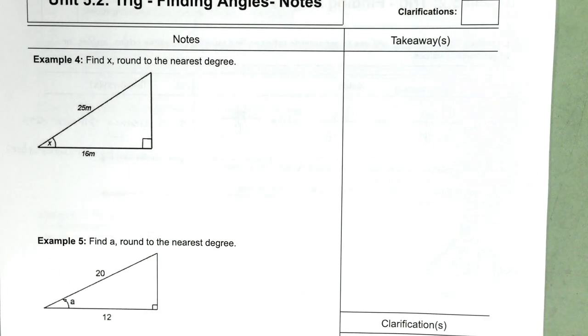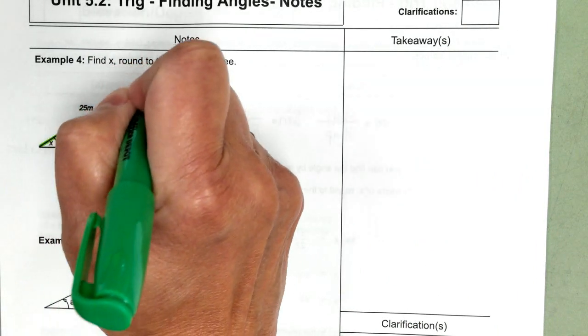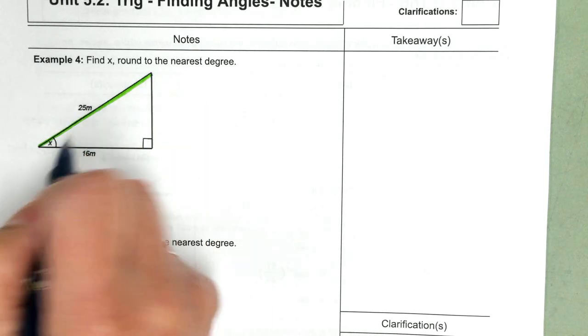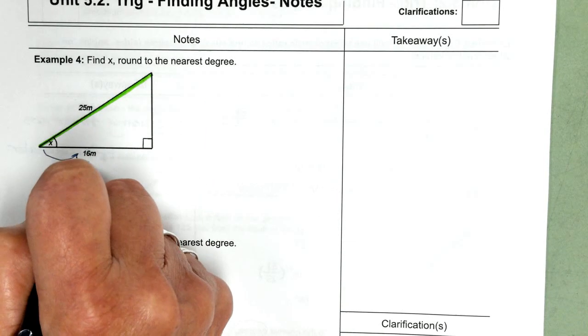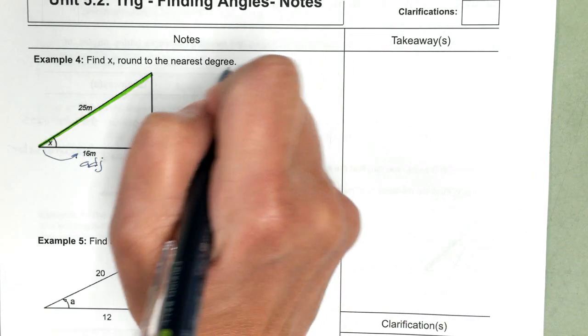All right. Example four. We have our hypotenuse and adjacent side. So that means we're going to use cosine.